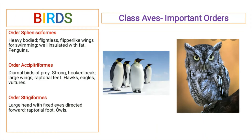Order Accipitriformes includes diurnal birds. They have strong hooked beaks, large wings, and raptorial feet. These are adapted predators and include hawks, eagles, and vultures. Order Strigiformes includes birds that have a large head with fixed eyes directed forward and also possess raptorial feet.